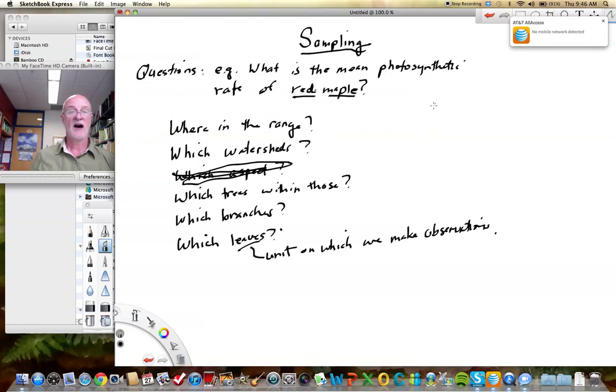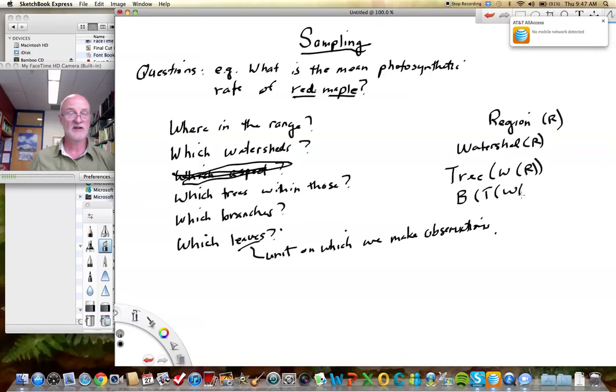In fact, this is a nice sort of hierarchical model here. We're going to, later on in the semester, we're going to see that this is actually a nested design. So we have region, we have watershed within region. I'm going to abbreviate region R. And then we have tree within watershed within region. I'm going to abbreviate watershed W. And then we have branch within tree within watershed within region. You can see this, it's nested. We have leaf within branch within tree within watershed within region. And in fact, at the lowest level then, the leaf is nested within branch, tree, watershed, and region.